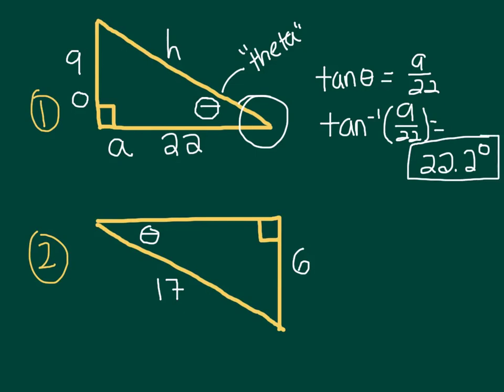Now quick note, if you're using the MyScript calculator on your iPad, you're gonna write A tan 9 over 22. The A just stands for arc tan, which is another word for the inverse tangent.